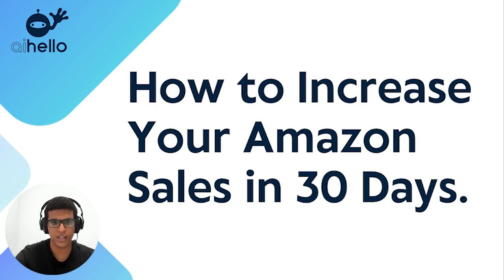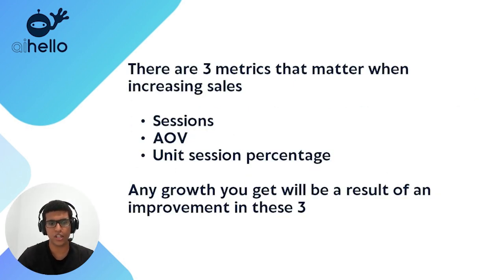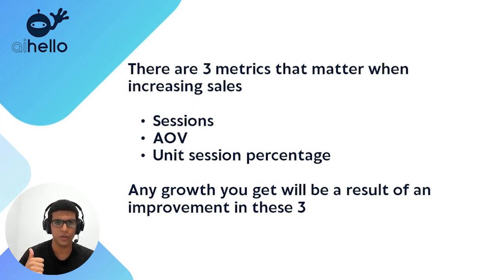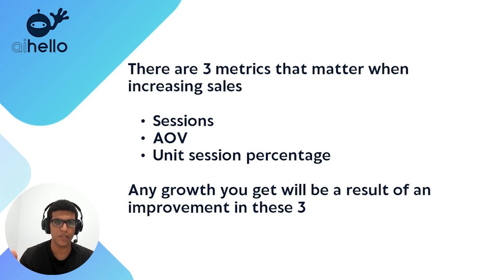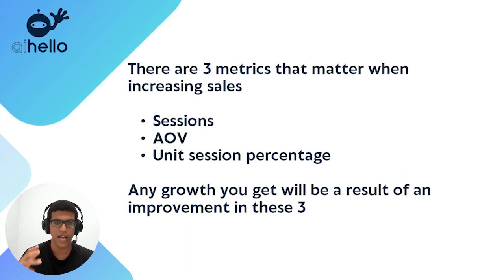The first thing we need to cover are the actual metrics that lead to increased sales. You have three metrics to focus on: your sessions, which is just the number of people going to your product listings; your average order value, which is how much the average person spends when they check out; and your unit session percentage, which is the percentage of sessions that convert into orders. Any growth in your account will be a result of an improvement in one of these three metrics.